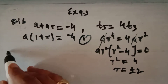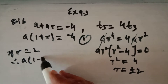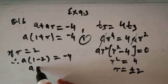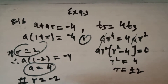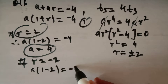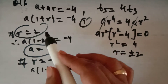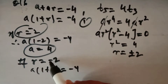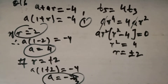When r equals 2, substituting into a(1+r) = -4 gives a(1+2) = -4, so a equals -4/3. When r equals -2, substituting gives a(1-2) = -4, so a equals 4. We are getting two cases for the first term and common ratio.